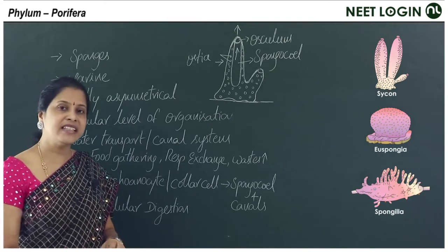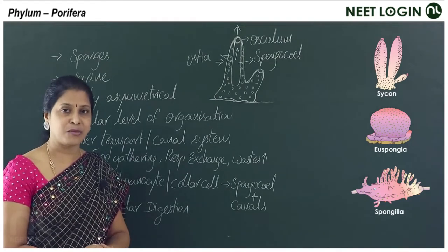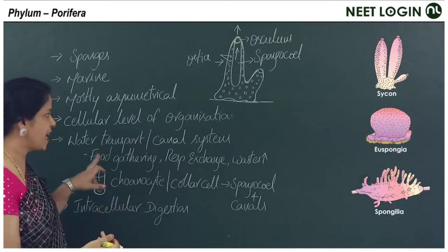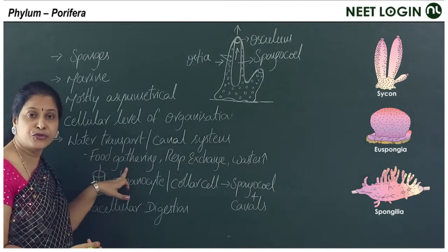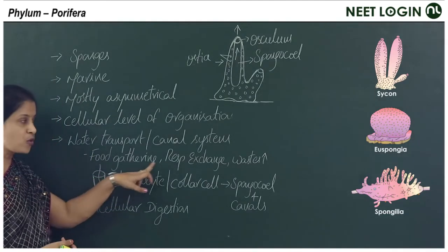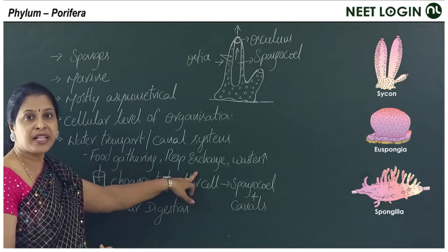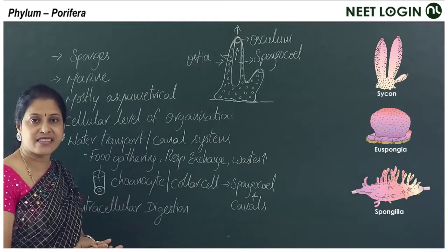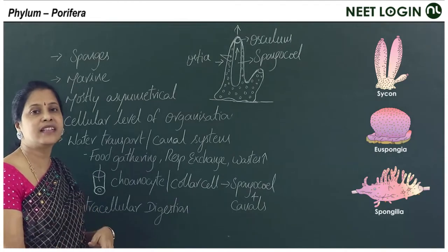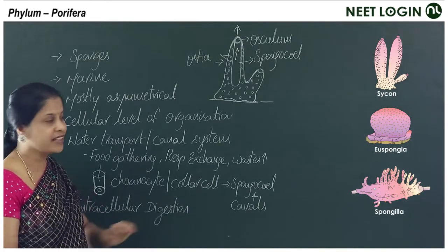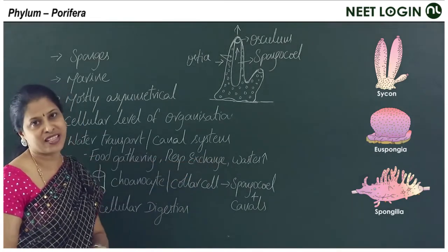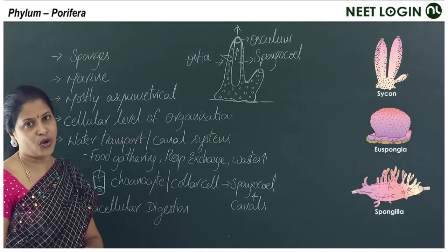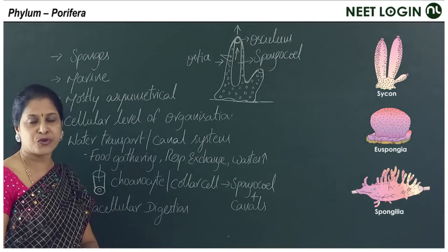The canal system is helpful for food gathering, respiratory exchange — intake of oxygen and release of carbon dioxide — and removal of waste materials. This is how the water transport system functions in poriferans.